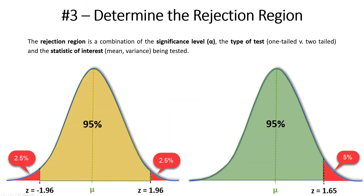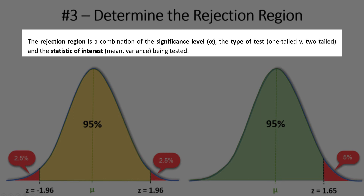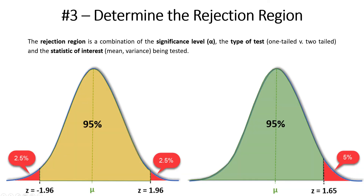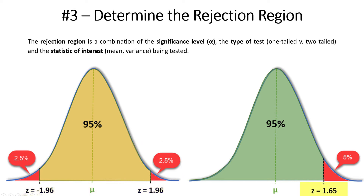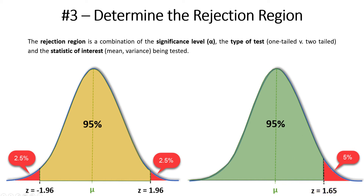Step three: determining the rejection region. The rejection region is a combination of the significance level and the type of test. I'm showing two different types here — the two-tailed test and the one-tailed test. We have to translate the significance level into a z-score. For a two-tailed test, z-scores of minus 1.96 and positive 1.96 form the boundary of the rejection region — any z-score greater than 1.96 in absolute value falls into the rejection region. For a one-tailed test with a 5% significance level, a z-score of 1.65 forms the boundary of the rejection region.